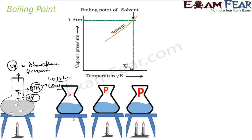The moment you heat, the vapor pressure increases. For example, if you keep the liquid at room temperature the pressure is some small p. The moment you heat it, the pressure increases further and further. At a point, this increased pressure equals the atmospheric pressure — because the container is open — and that is the point where it starts boiling.